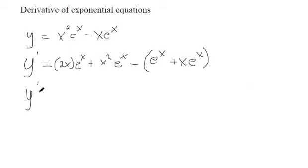We can clean this up. These terms can't combine because one has x and one has x squared. I can subtract the e to the x, I can subtract the x e to the x. Distribute that minus sign.